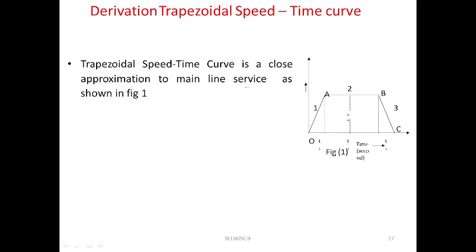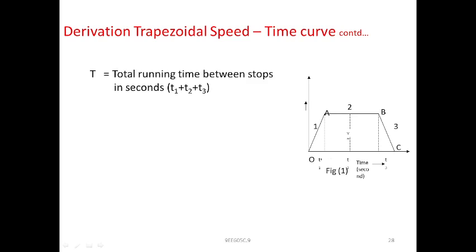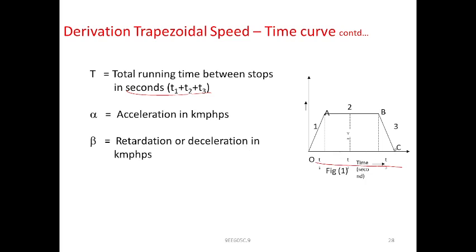The trapezoidal speed-time curve gives a close approximation to main line services, as discussed earlier. For the derivation, we have the following assumptions: D is the distance between two stops, T is the total running time between the two stops, α (alpha) is the acceleration in km/h/s, and β (beta) is the retardation in km/h/s.